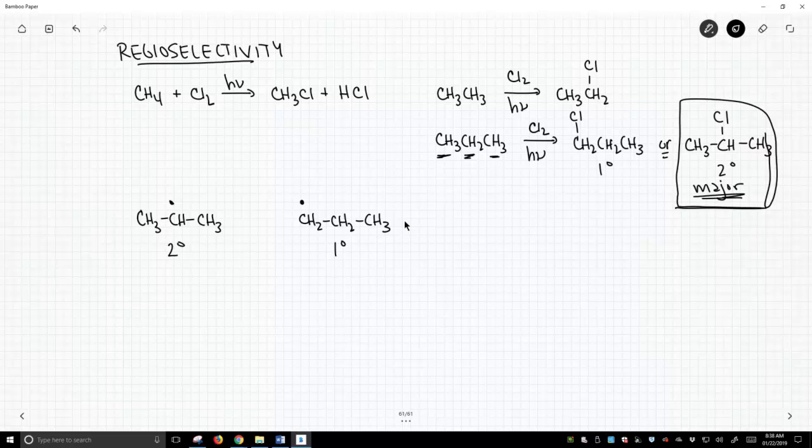So this regioselectivity pops up in all kinds of halogenation. If we were going to do a radical halogenation on this alkane, we have all kinds of hydrogens in this molecule that we could pull off. Some are on primary carbons, some on secondary carbons, and there's just one on a tertiary carbon. Well, guess which one is preferred? It's the tertiary carbon. So this is our preferred product for this reaction.